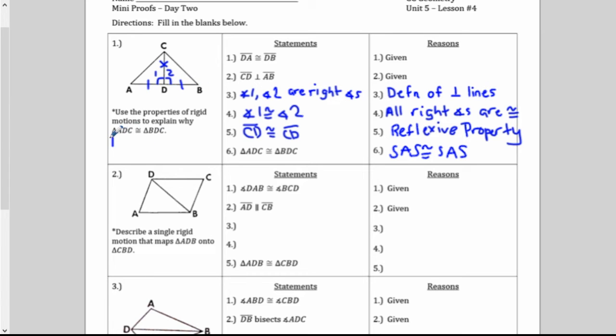So we know that reflections preserve two things. And those two things are then causing our triangles to be congruent. Reflections preserve distance and angle measure. And that is why the triangles are congruent. The distance didn't change. The angles didn't change. So if we put the triangles on top of each other, they'd be exactly the same. Distance and angle measure.